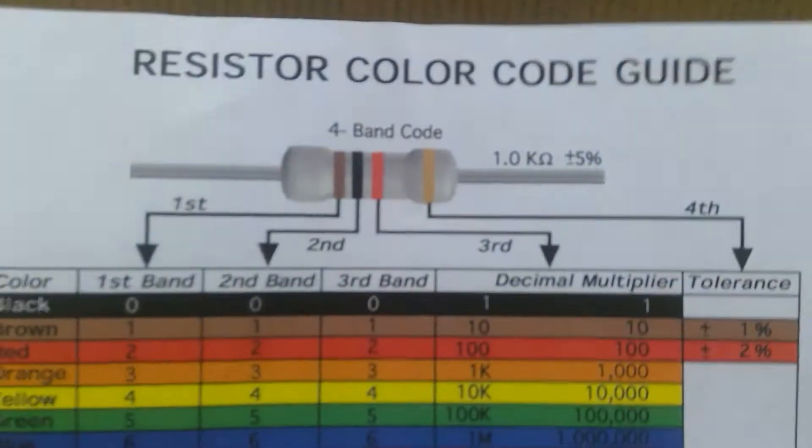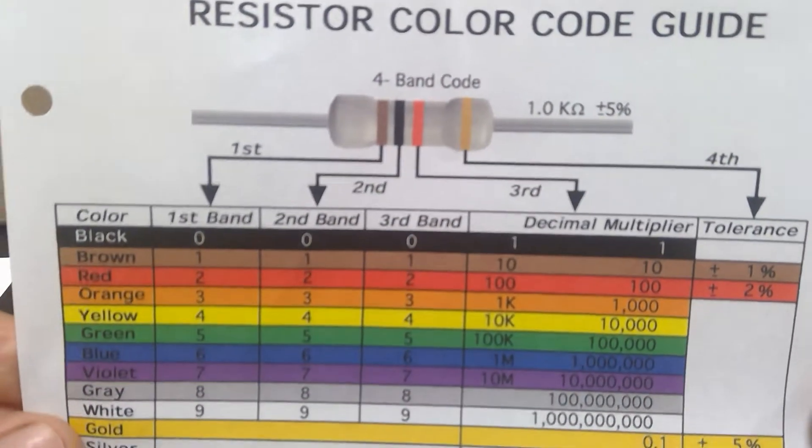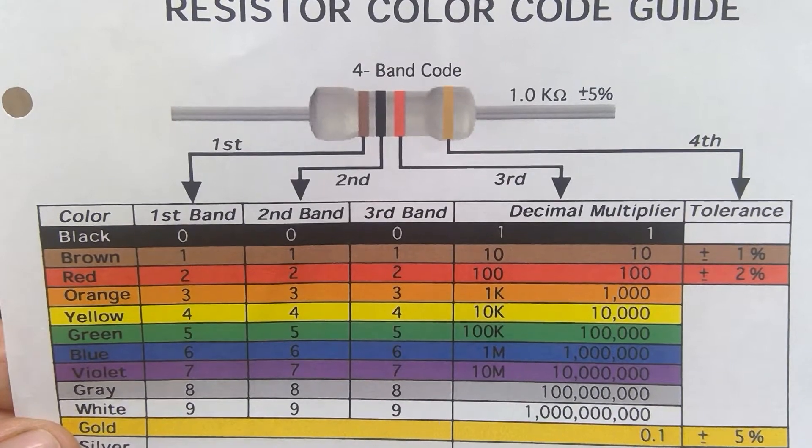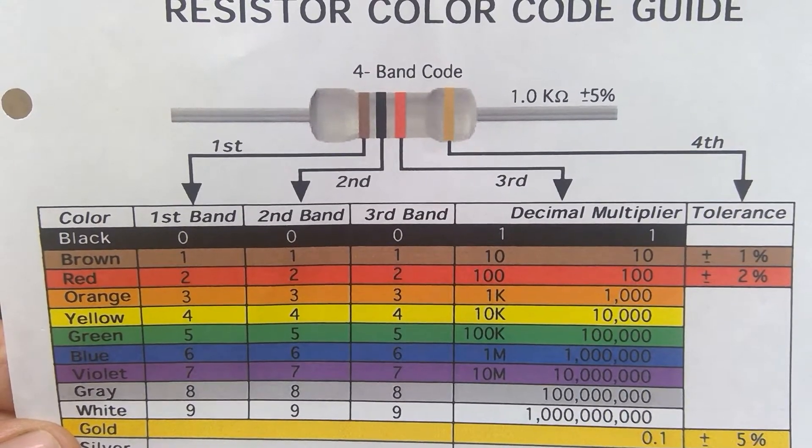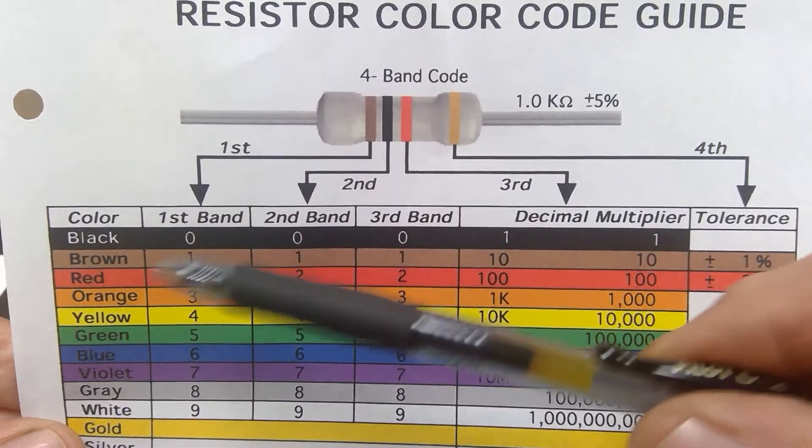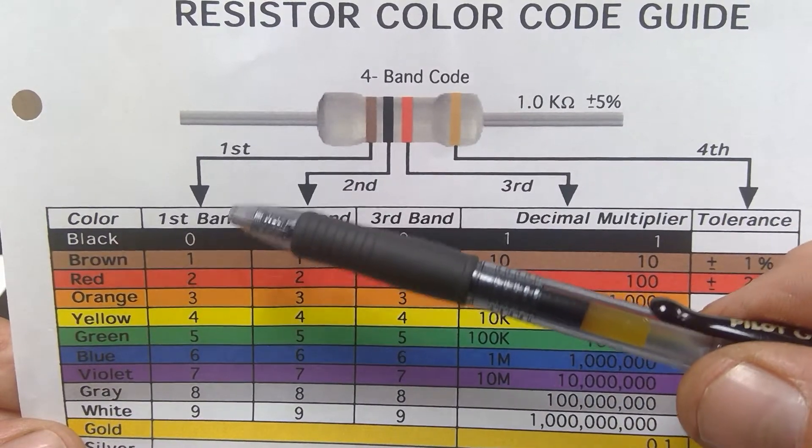And we're going to decode these resistors using a resistor color code guide. So if we consider that brown, black, and yellow that we just saw, we're going to figure out how we come up with a number or a value.